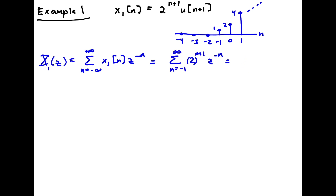We want to do some rearranging — let's pull a factor of 2 out front, so we'll be left with the sum from n equal minus 1 to infinity of (2z^(-1))^n.